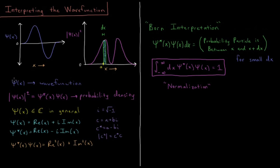So psi of x, as I mentioned, is the wave function, but psi of x squared, or the magnitude of psi of x squared, this is equal to the complex conjugate of psi times itself, is what we would call the probability density.